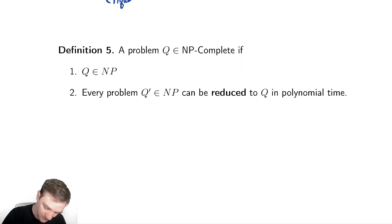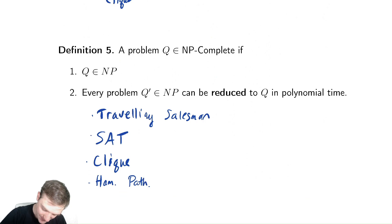Some of these include the traveling salesman problem, the satisfiability problem, the clique problem, Hamiltonian path, a whole bunch of problems. We will see how we can prove this later. And we will do several proofs. And I will ask you guys to do several proofs of proving a problem is NP complete.